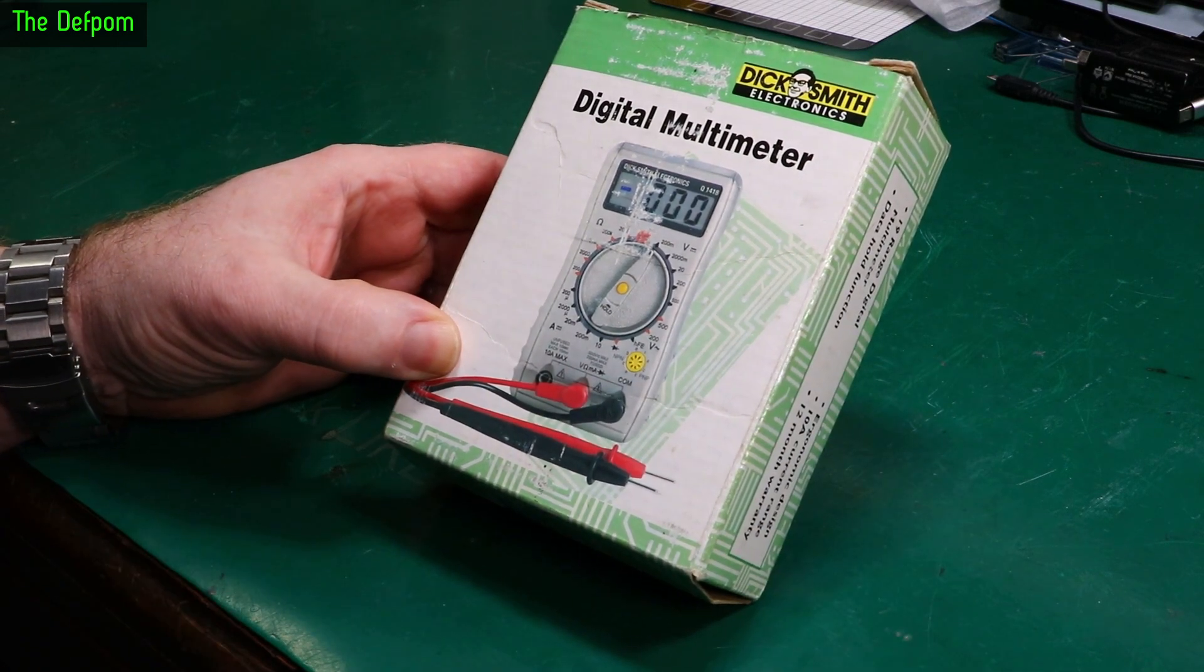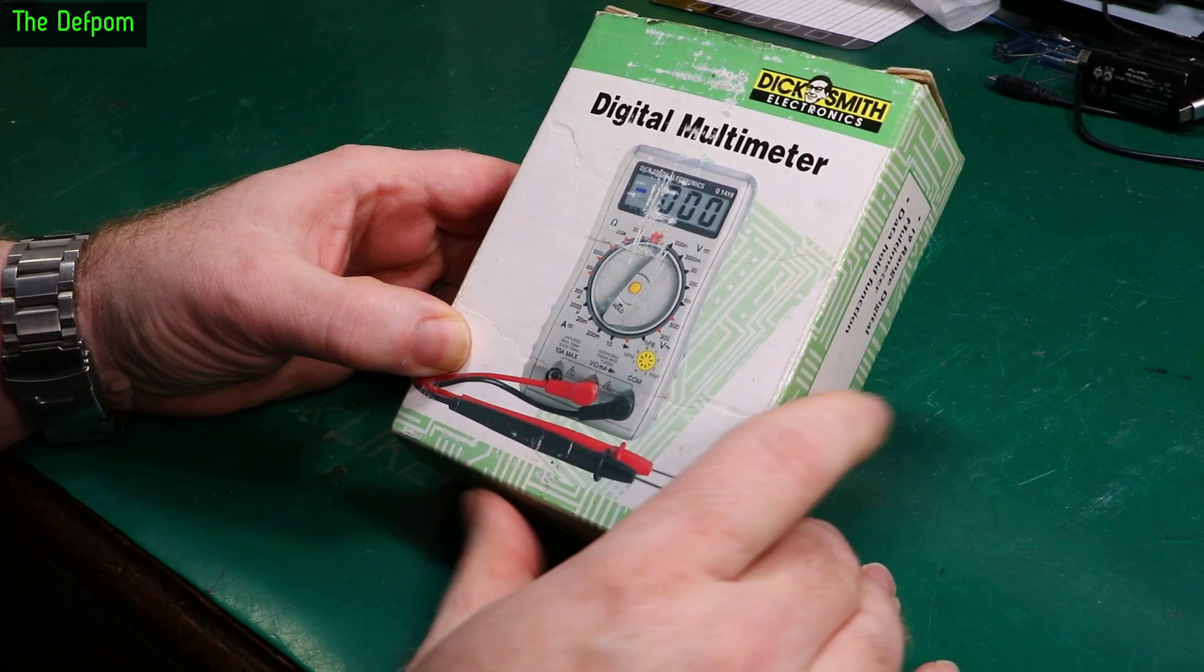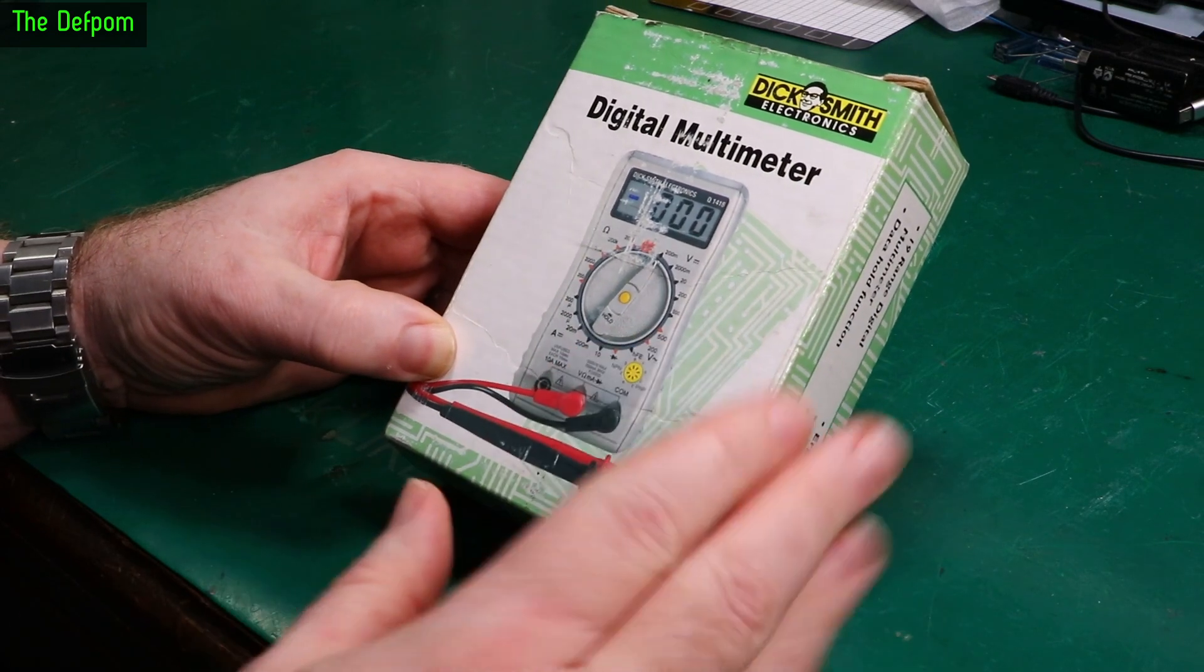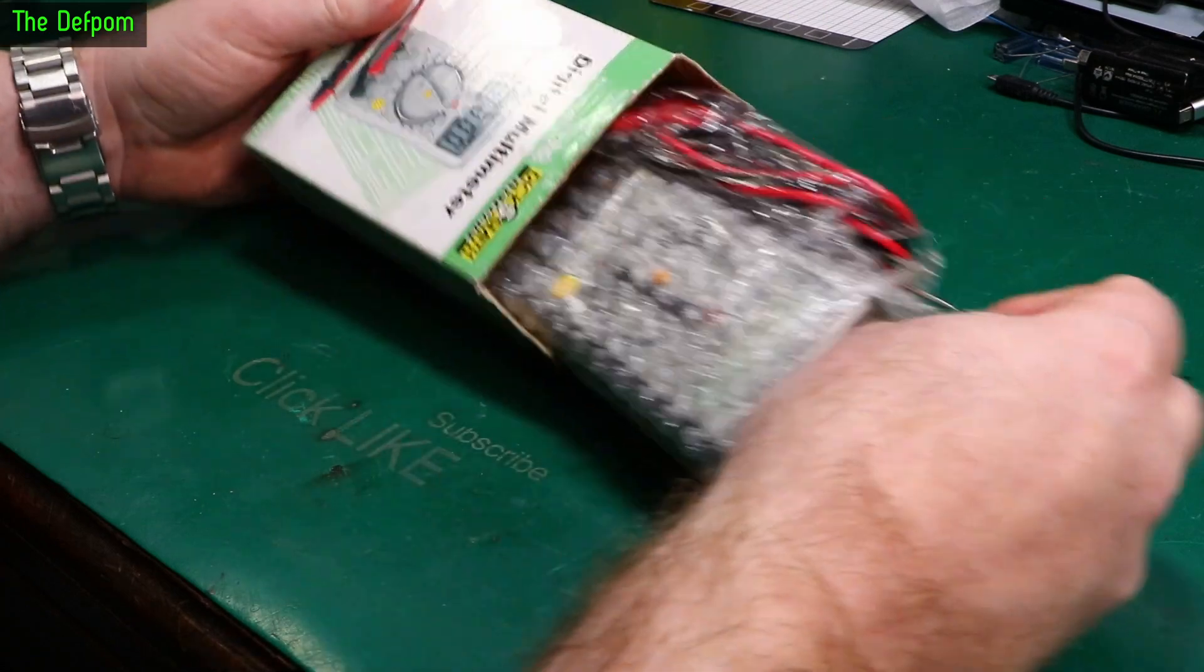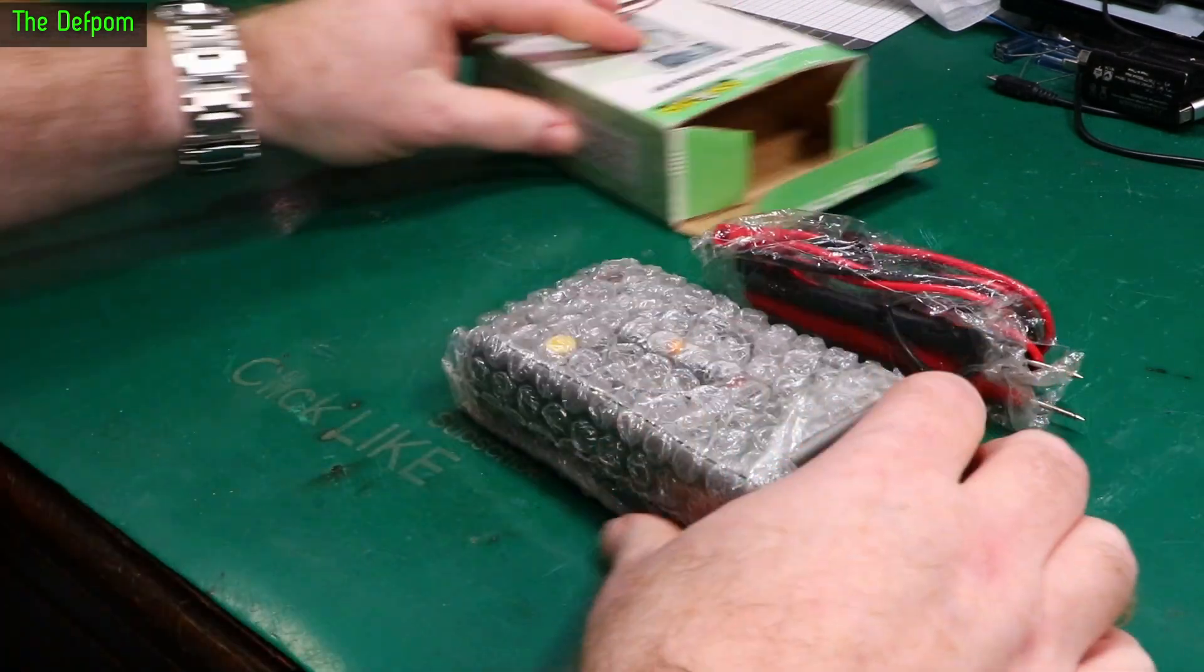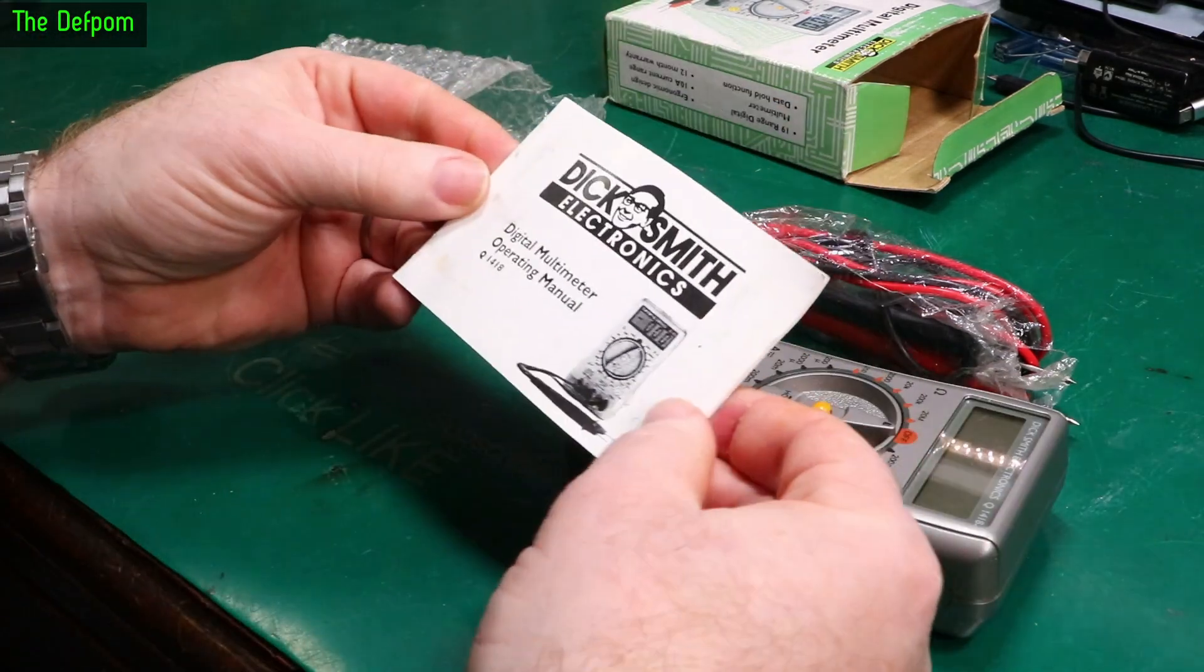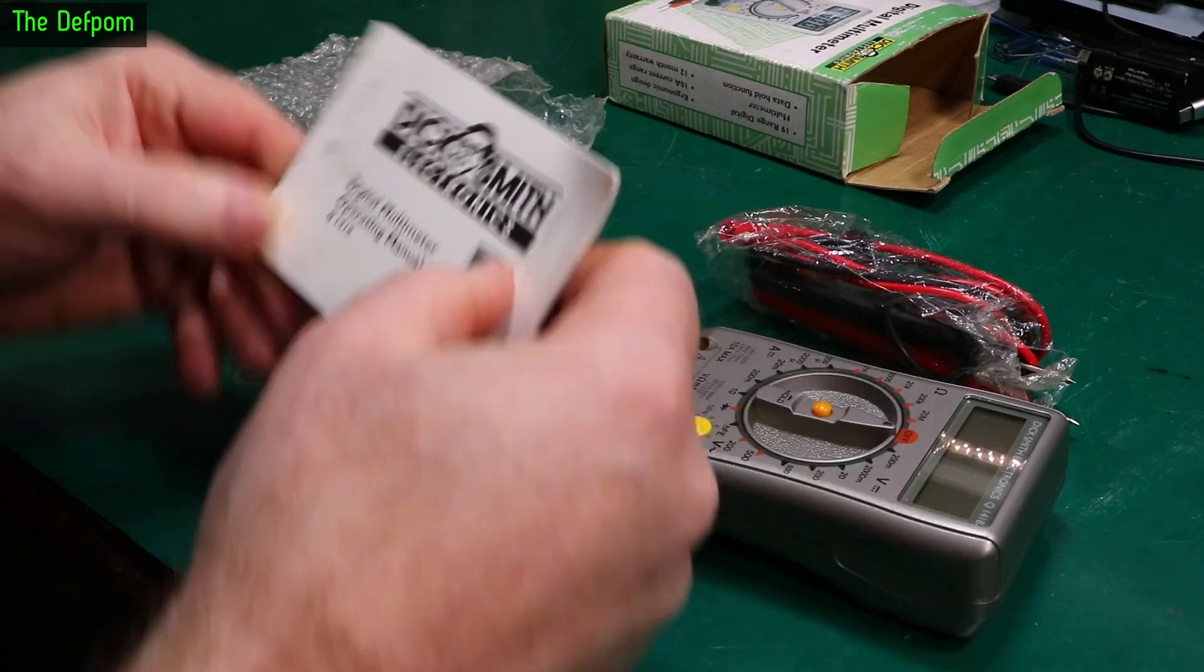I'm just going to have a quick look at this multimeter. Now I've actually owned this multimeter here for about 20 years. I've had this a long time. This used to be kept in my car, just like this in the box. This is an old Dick Smith electronic one, a very basic thing. It's a Q1418.